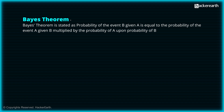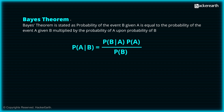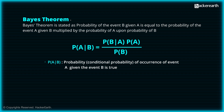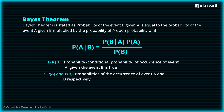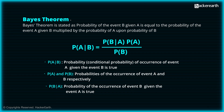Bayes' theorem gives us a method to calculate the conditional probability — that is, the probability of an event based on previous knowledge of related events. More formally, Bayes' theorem states: P(B|A) = P(A|B) × P(A) / P(B). The components are: P(A|B) is the conditional probability of event A given event B is true; P(A) and P(B) are the individual probabilities of events A and B respectively; and P(B|A) is the probability of event B given event A is true.